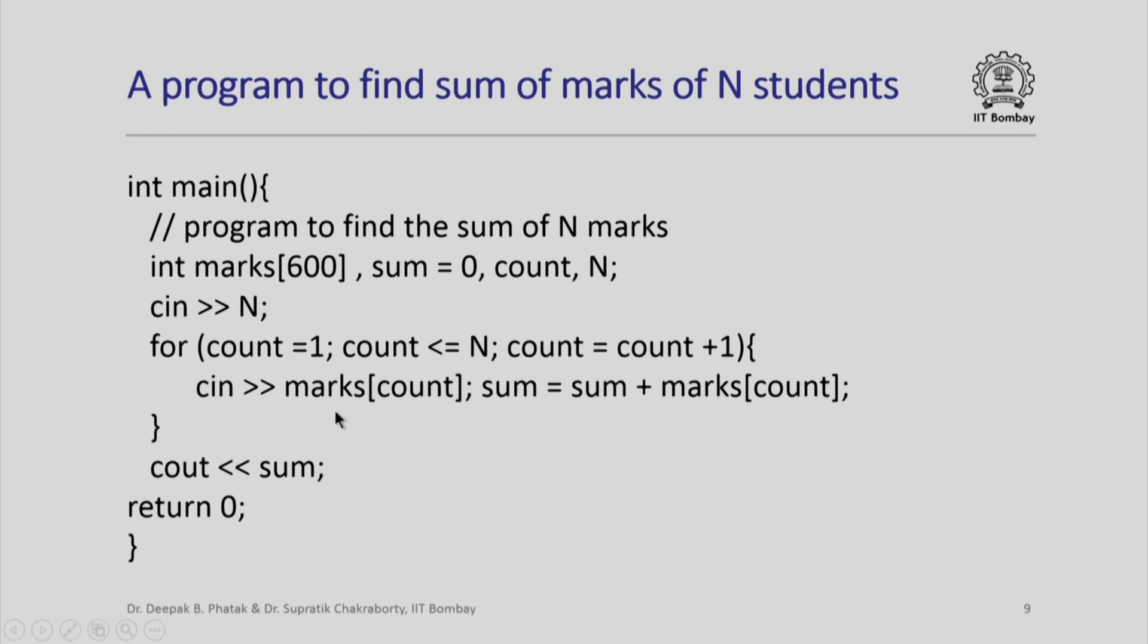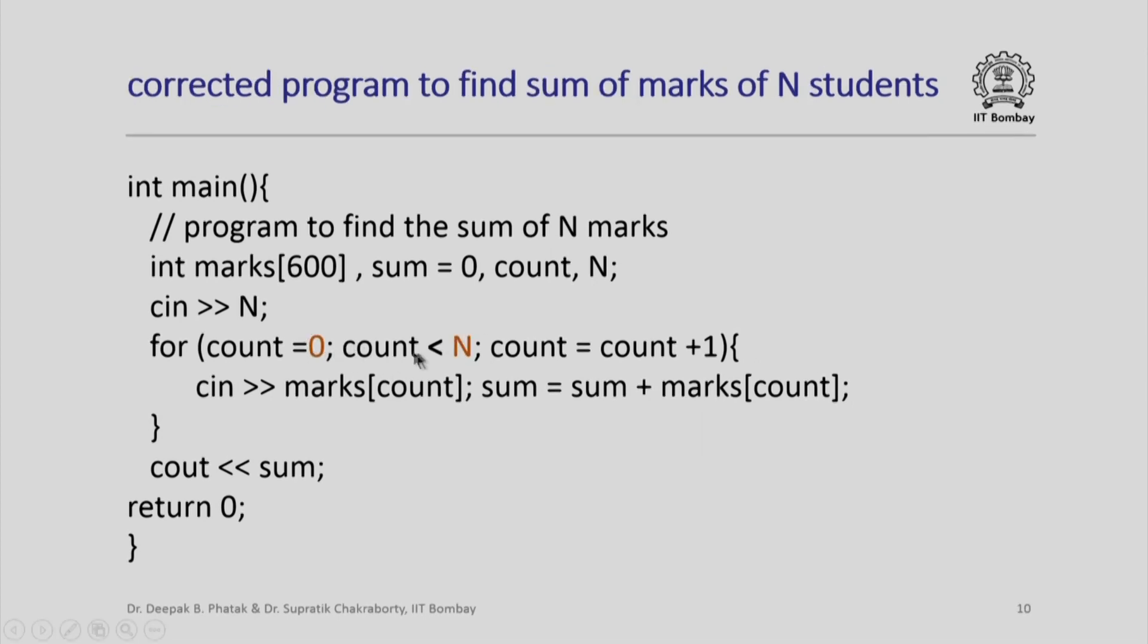Unfortunately, marks, the array, starts with index 0 and not with 1. This will work, of course; marks[0] will not be read. However, when the last iteration is executed, n will go to the n+1-th element. We do not want this, so we can correct this by simply running the loop from 0 to n minus 1.